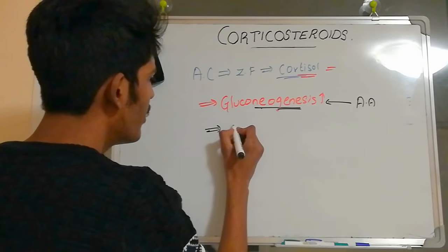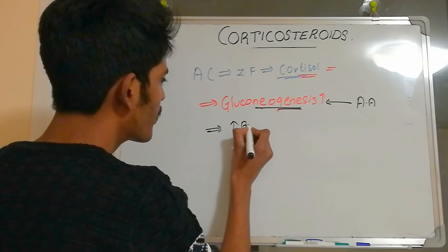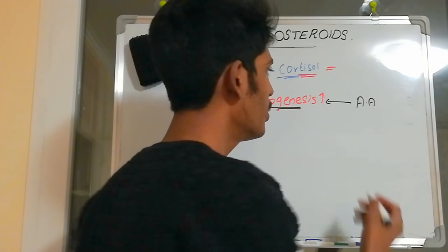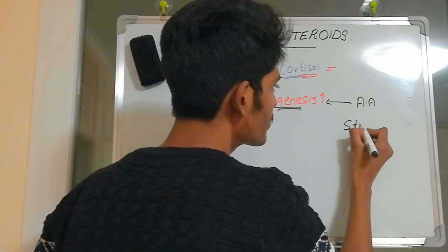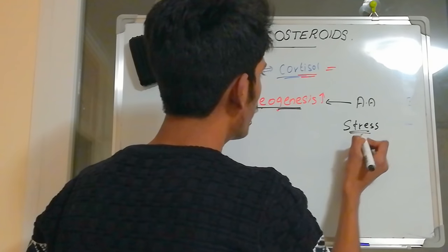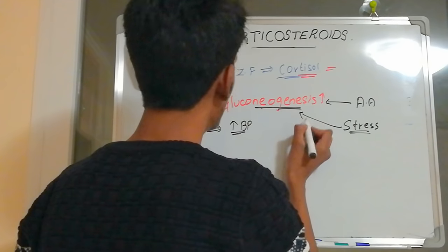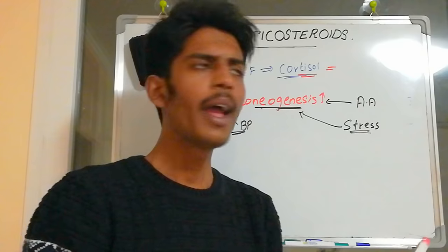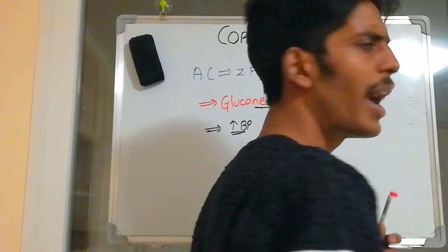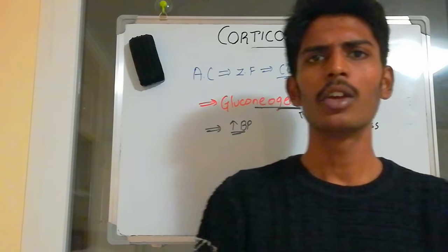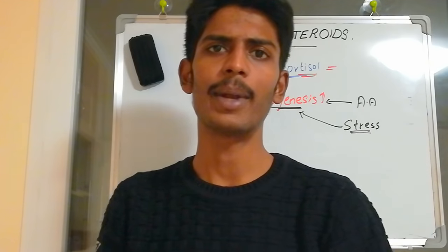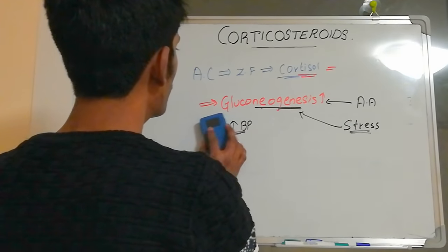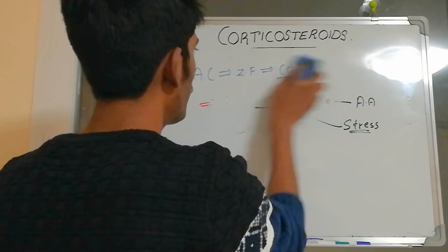Apart from gluconeogenesis, corticosteroids also increase blood pressure. For example, when we are under stress, we need more energy — that is provided by gluconeogenesis. So these drugs are important during stress as well. They also have an anti-inflammatory property, which we will discuss next.